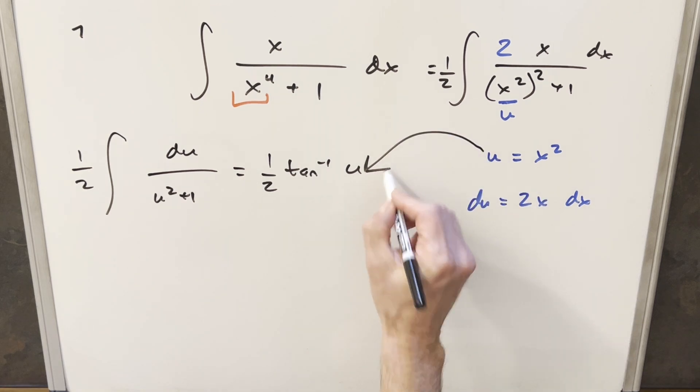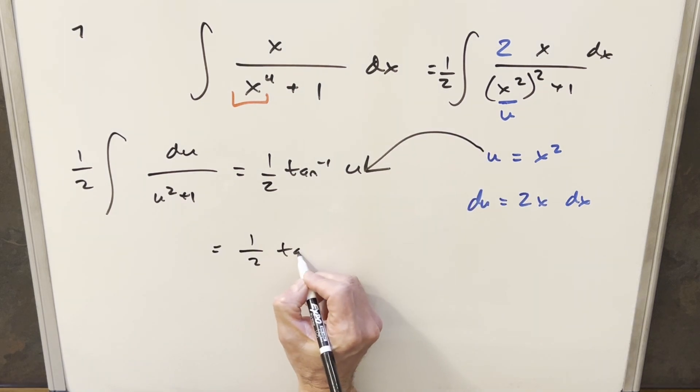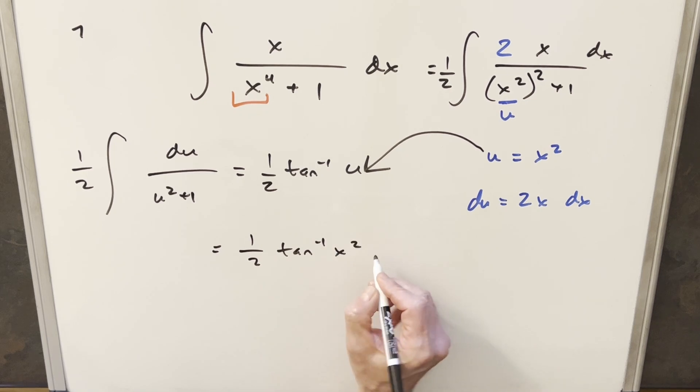Just back substitute to finish it off, and we'll have our final solution of just 1 half arctan x squared plus c.